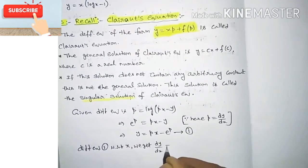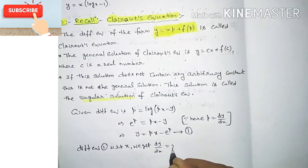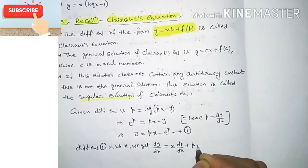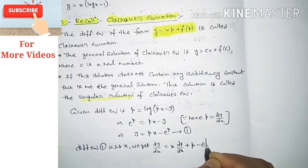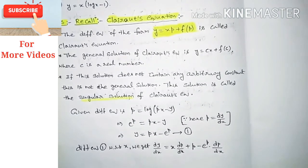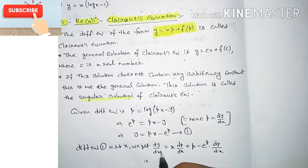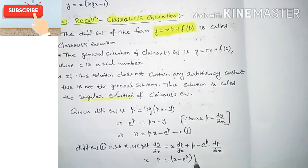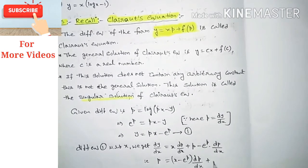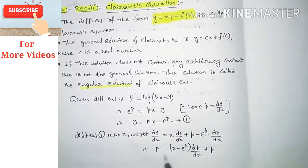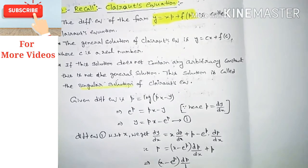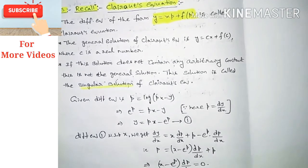Differentiating equation one with respect to x: dy/dx = derivative of px using the product rule gives x · dp/dx + p · 1 − e^p · dp/dx. Since dy/dx = p, we get p = (x − e^p) · dp/dx + p. The p's cancel, leaving (x − e^p) · dp/dx = 0.